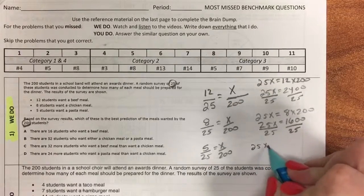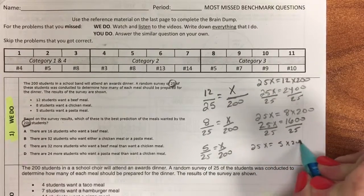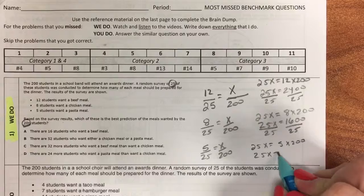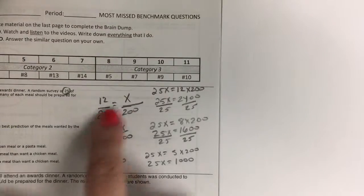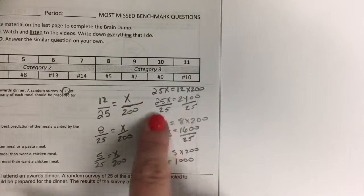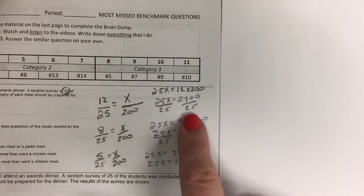Again, we're going to need some scratch paper. And then 25x is equal to 5 times 200. So 25x is equal to 1000. So I've set up my proportions, I've cross multiplied, I just need to do that final division step.